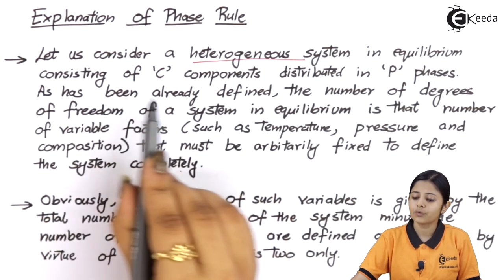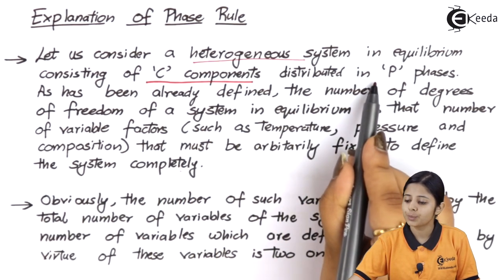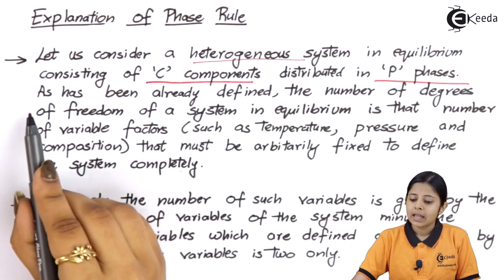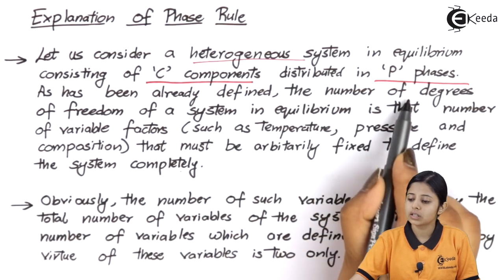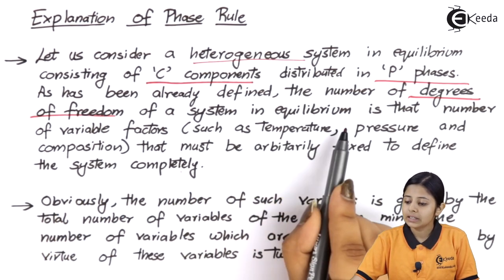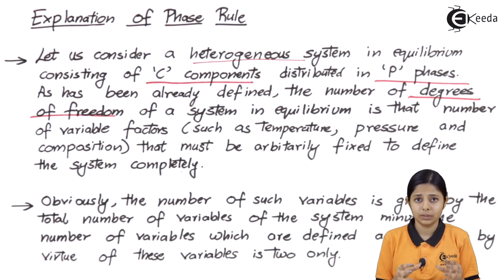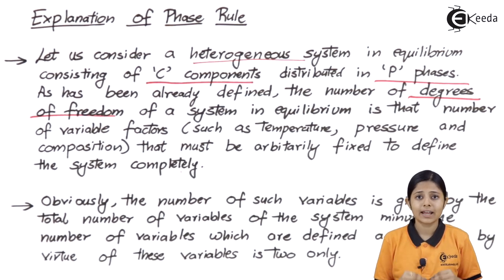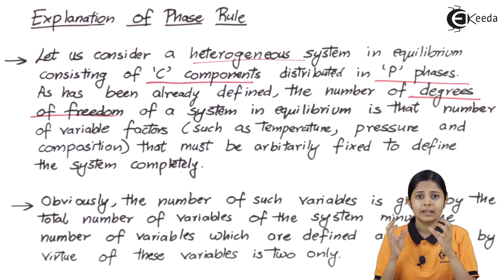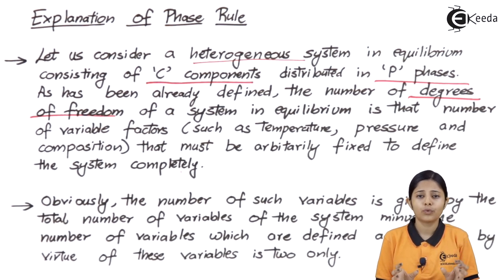In equilibrium consisting of C components distributed in P phases, the number of degrees of freedom F of the system is the number of variable factors. Degrees of freedom is the number of variables that can change. Gravitational, electric, or magnetic forces should not affect the system at equilibrium. The only three factors which can affect the system at equilibrium are temperature, pressure, and concentration. Degrees of freedom F for a system can be defined in terms of only these three things: temperature, pressure, and concentration.